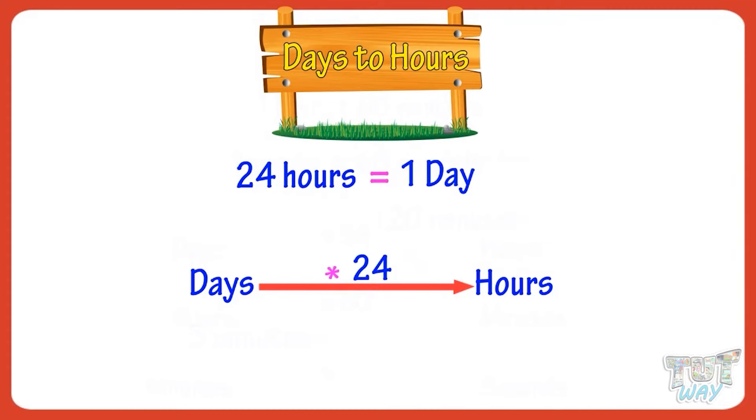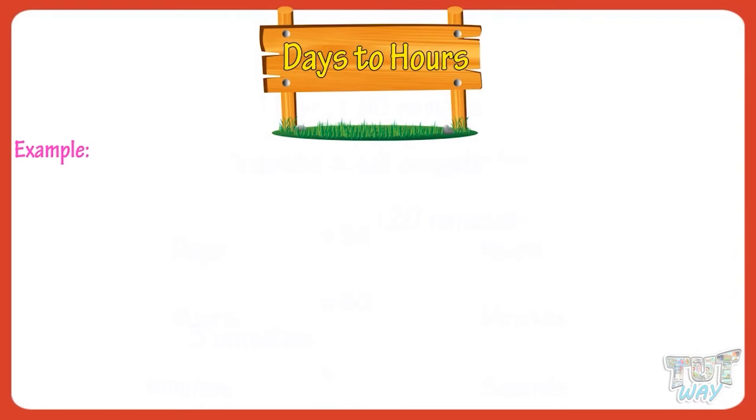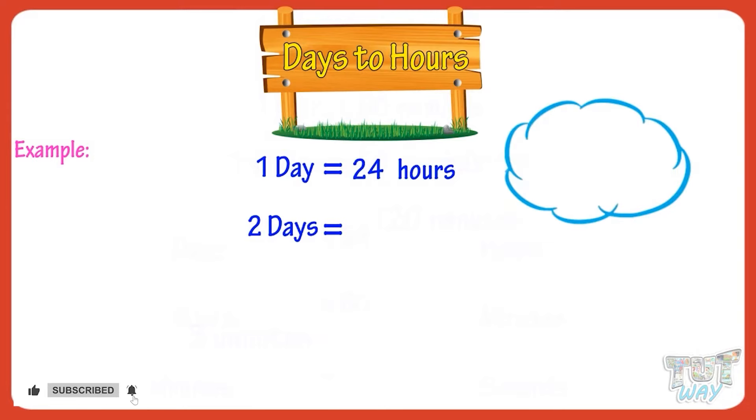Let's see some examples. One day equals 24 hours. So two days will be equals 24 plus 24 or 24 multiplied by 2 equals 48 hours.